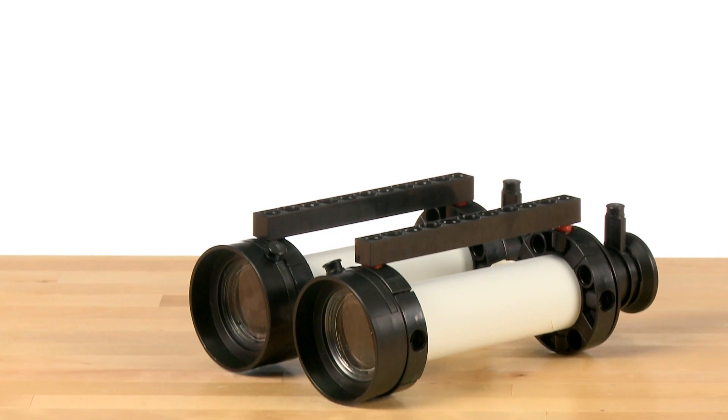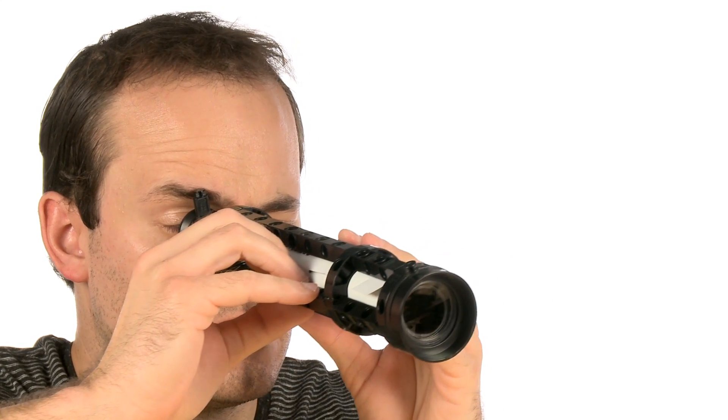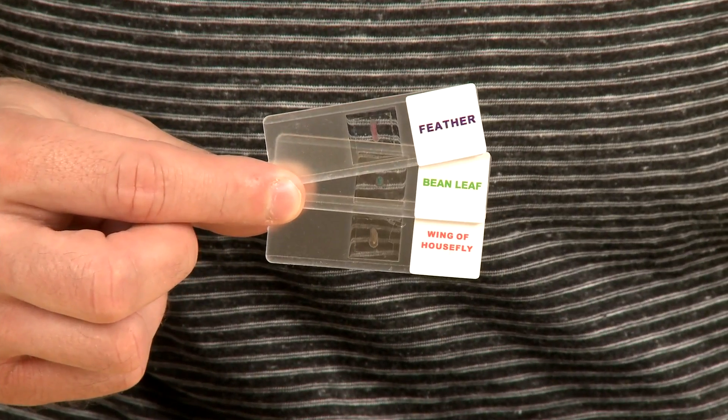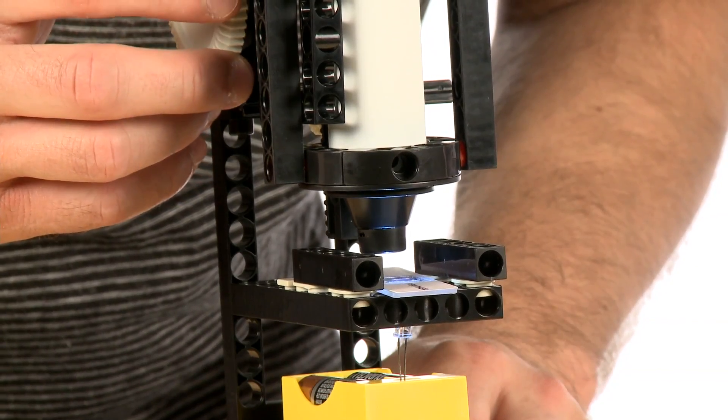Budding scientists can expect to construct binoculars and a variety of field scopes. For their self-made microscope models, three prepared slides are included in the kit, so they can conduct scientific research right out of the box.